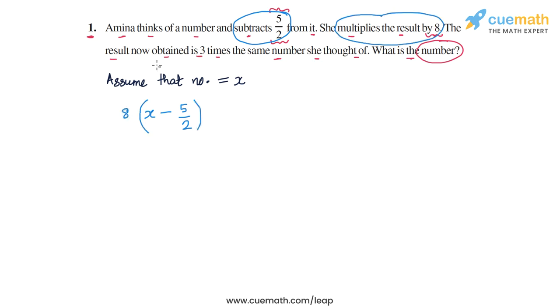So this whole number she multiplies by 8. And then we are told the result now obtained is 3 times the same number she thought of. So the result or this whole thing that she gets is 3 times the original number she thought of. So this whole thing should be equal to 3 times x.